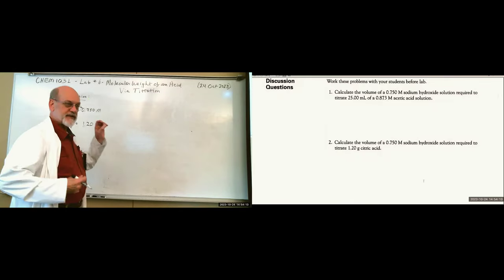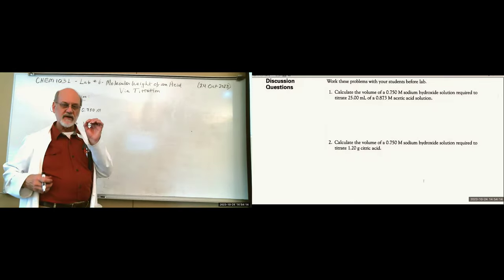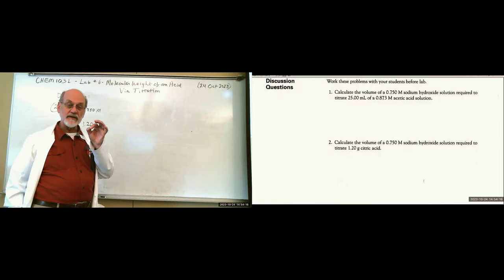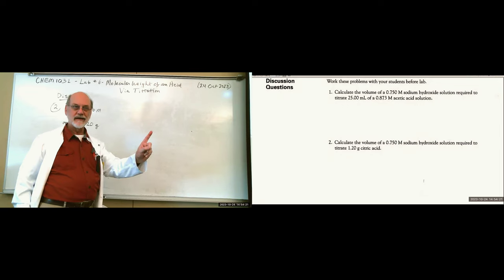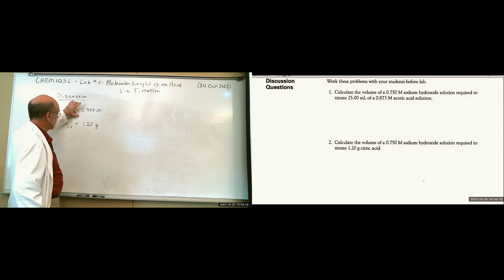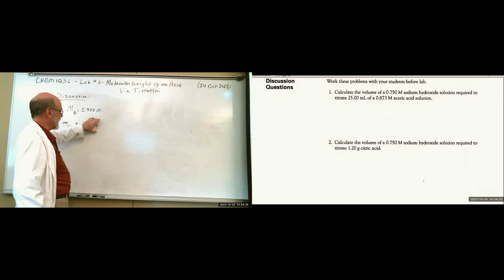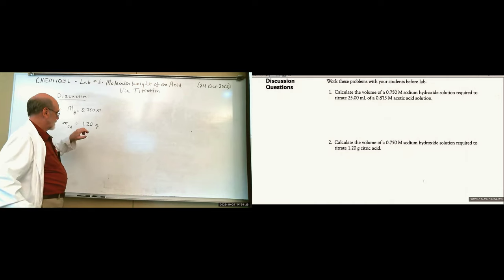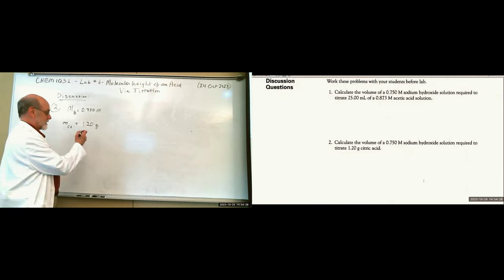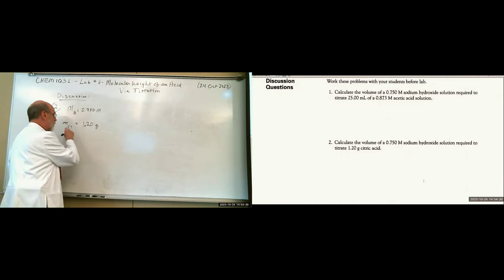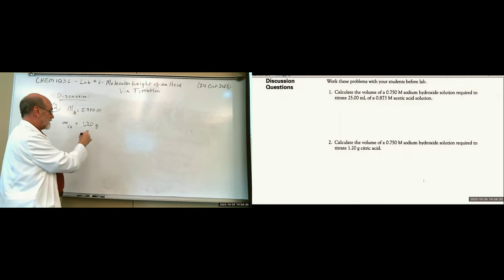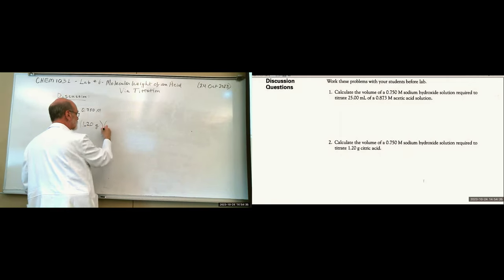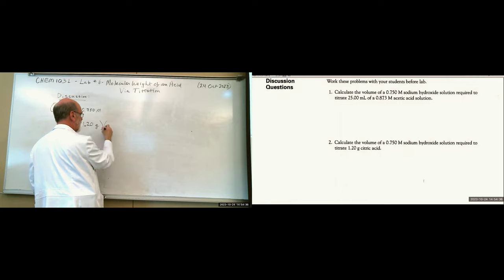The equivalence is the moles of hydrogen and the moles of hydroxide. Grams won't get it — we need to know how many moles of citric acid we have. So we need to convert the mass to moles of citric acid first, which requires the molar mass of citric acid.